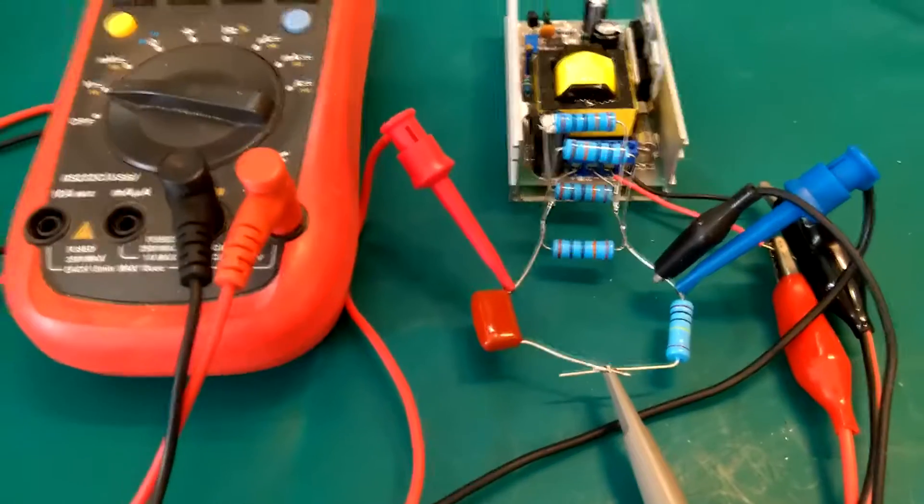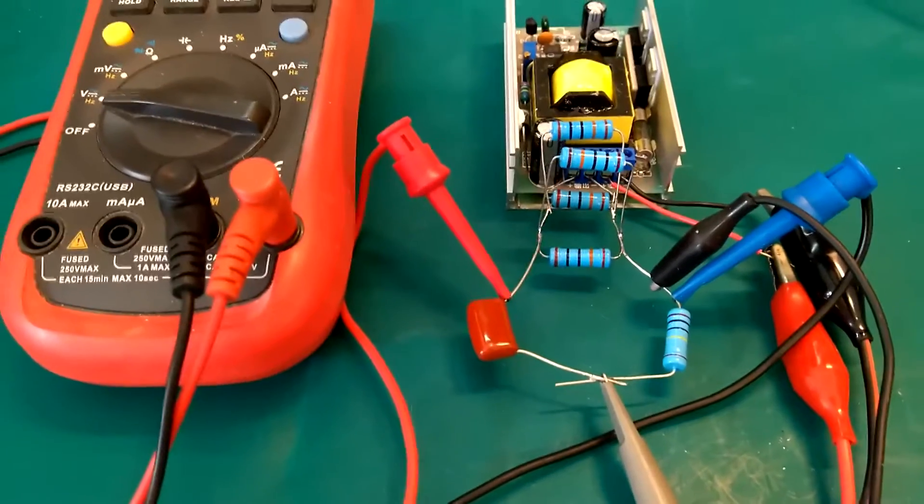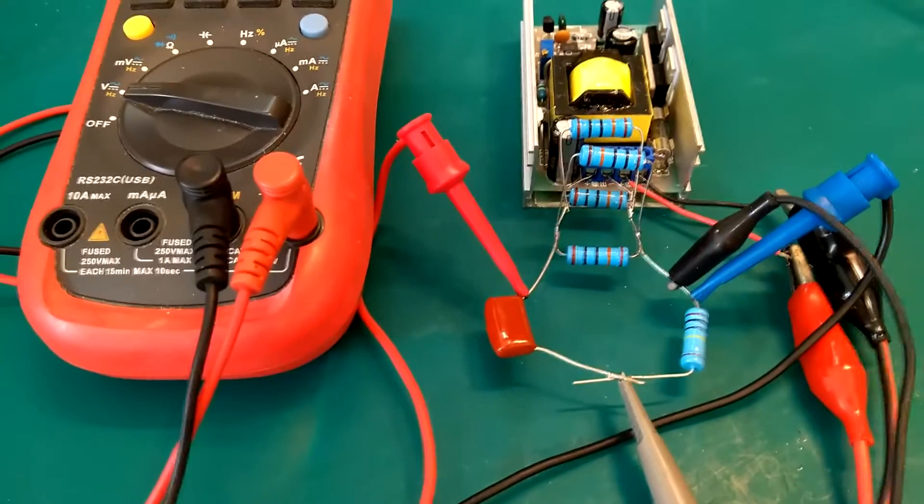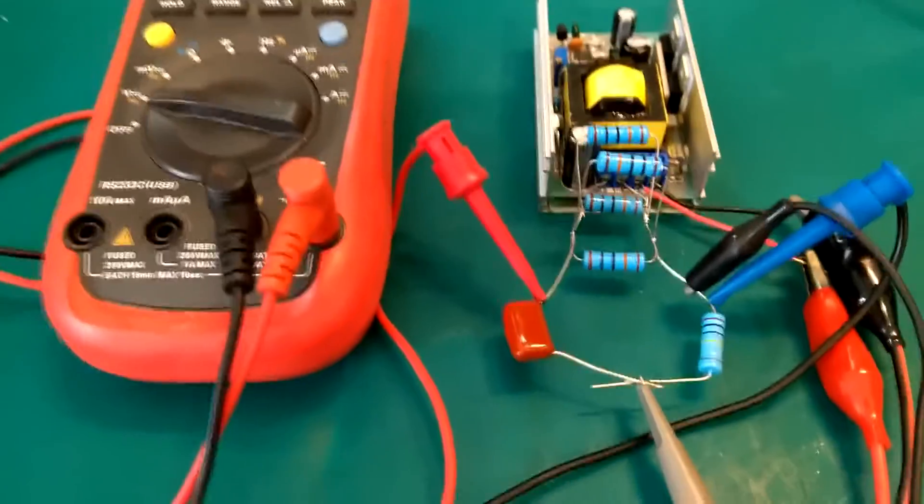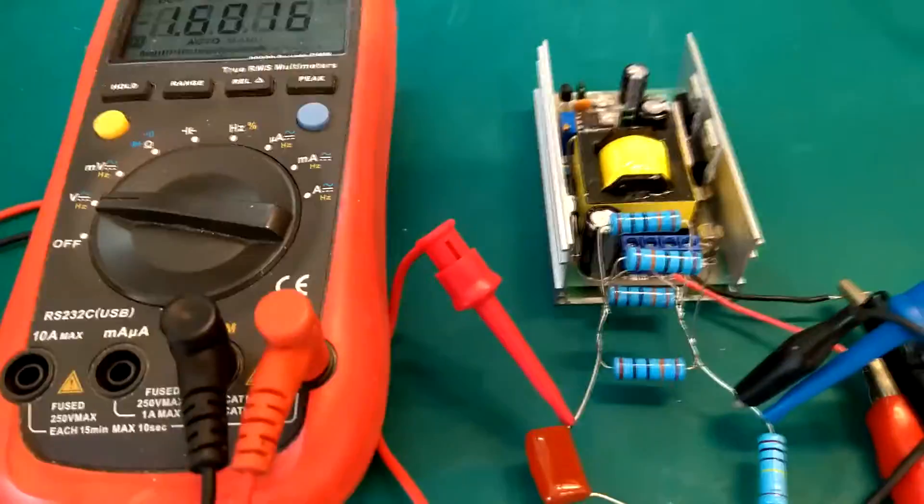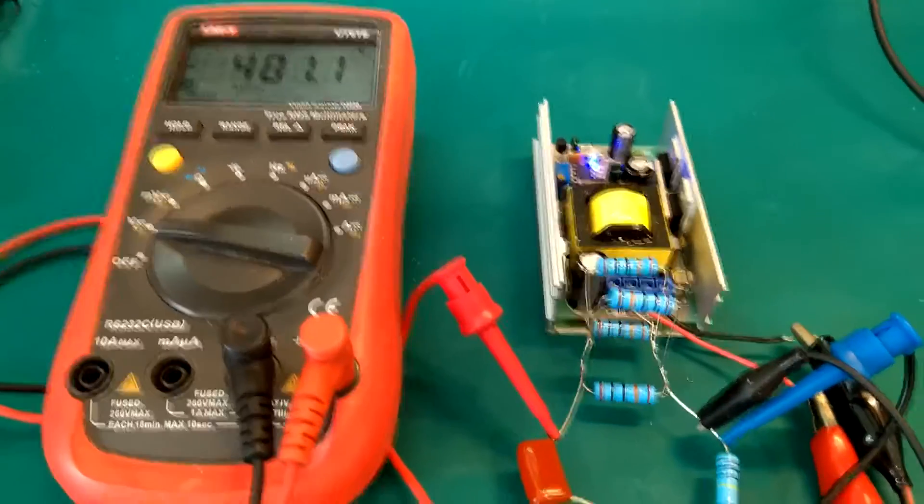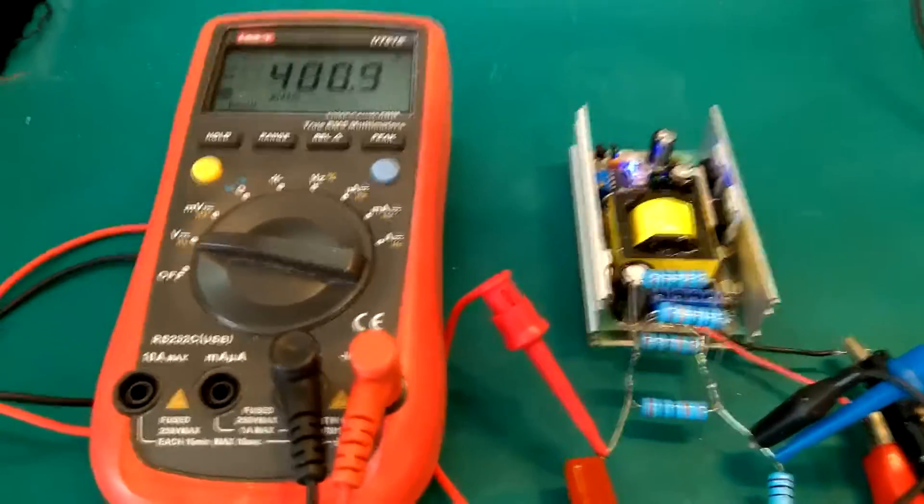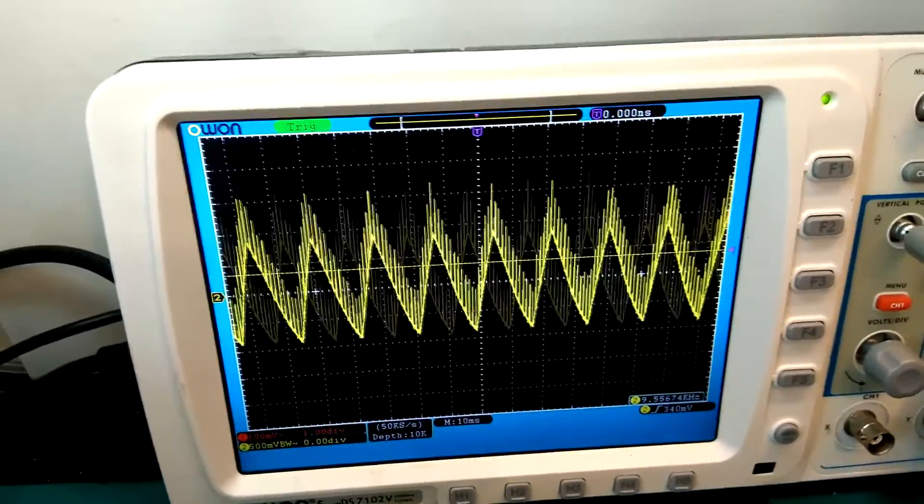Okay, so I've added two more 100 kilo ohm resistors in parallel, and that should give us a load of 25 kilo ohm. That should be around 16 milliamps at 400 volts. So let me try switch it on here and see what happens. Okay, we get our 400 volts, that looks good.